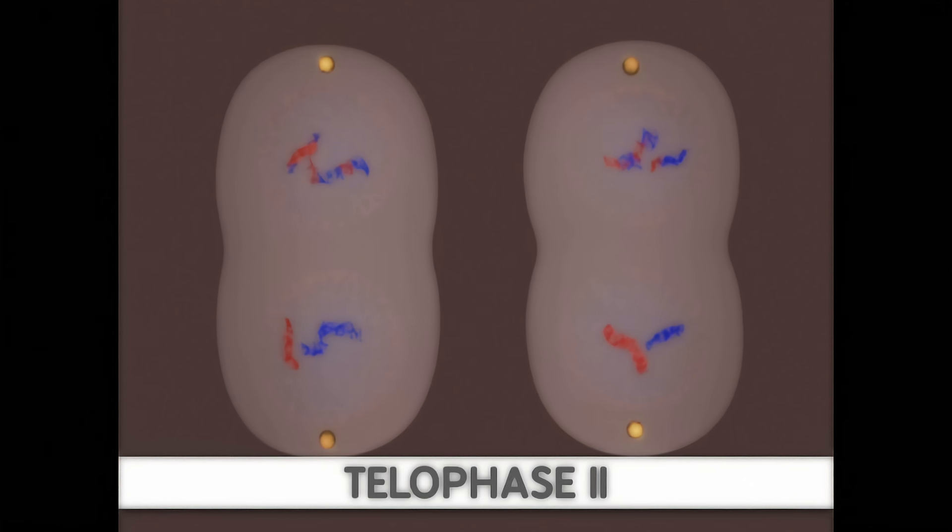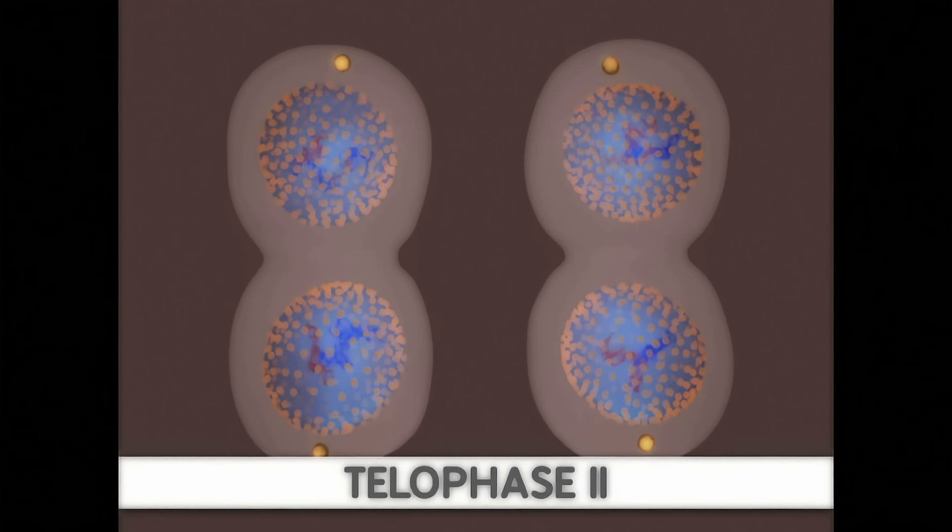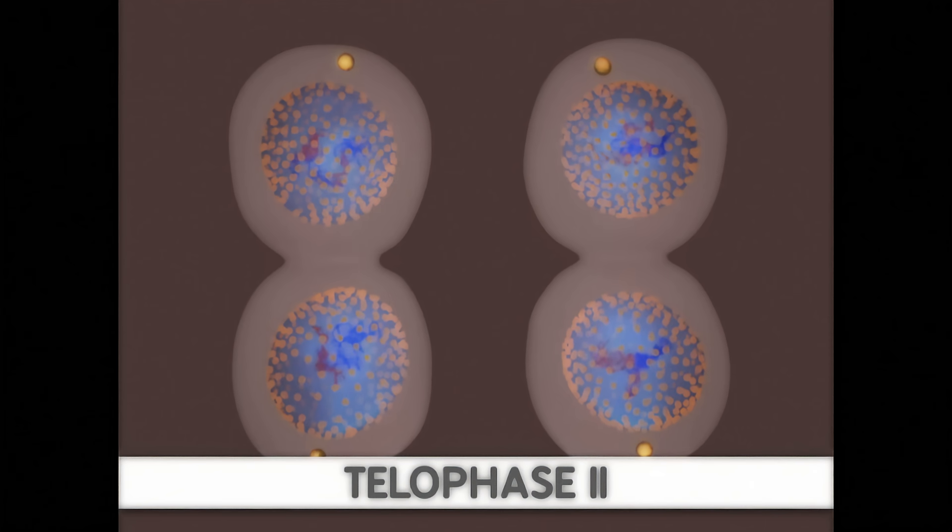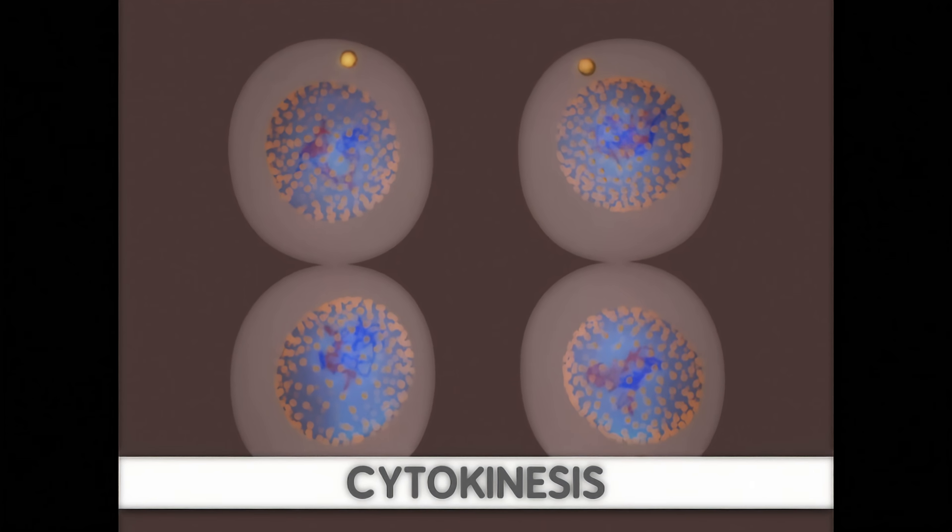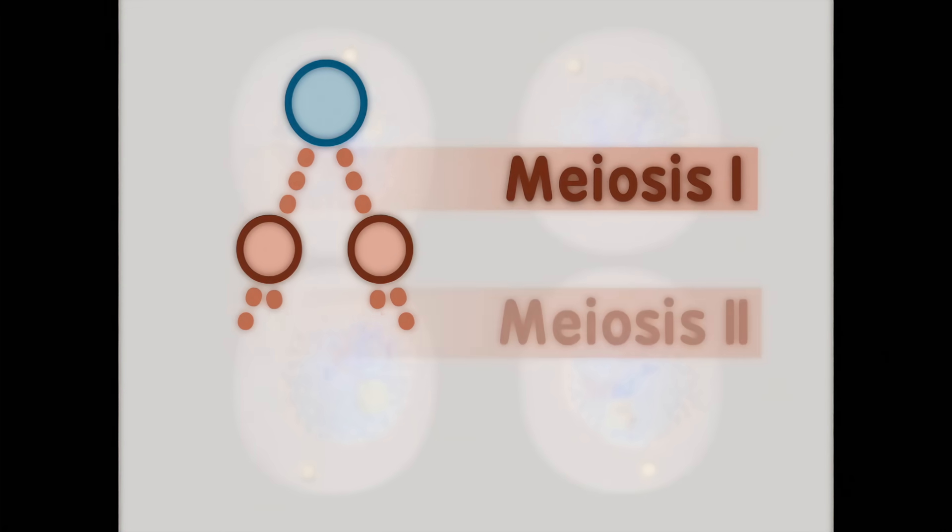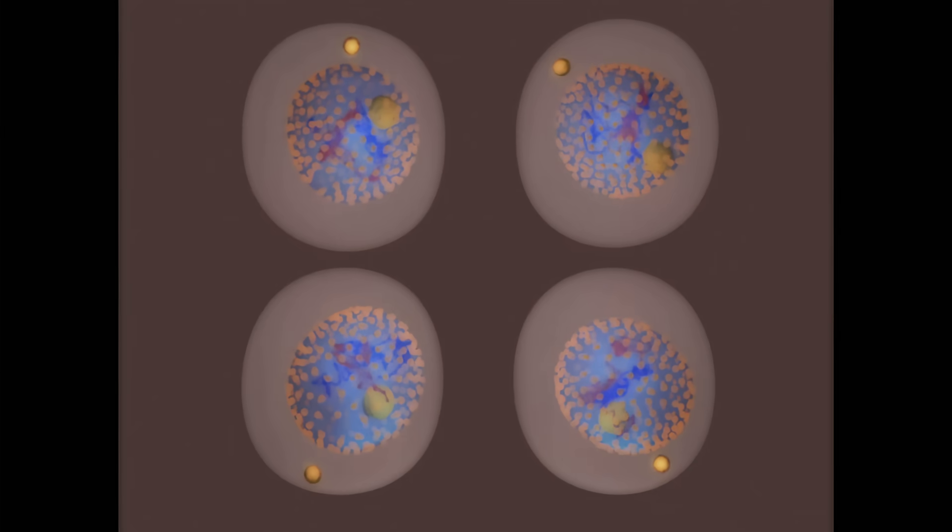In telophase II, the nuclear membrane reforms and the cytoplasm is divided into the two haploid daughter cells. This division is called cytokinesis. Since meiosis II began with two cells, and each of those cells were split into two cells, we now have four unique haploid cells at the end of meiosis.